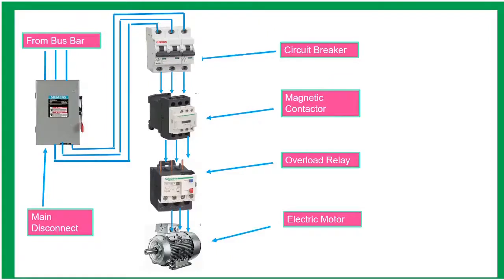This is the usual setup of motor control, from the bus bar going to the main disconnect. The purpose of main disconnect is to shut off the entire circuit. The circuit breaker is designed to protect electrical circuit from short circuit and ground circuit interruptions. Contactor is an electrically controlled switch used for switching higher current. Overload relay is designed to protect the motor from prolonged overcurrent which causes overheat and destroys the motor.